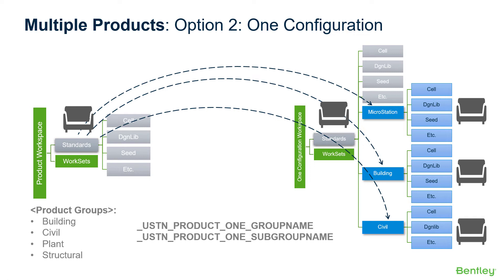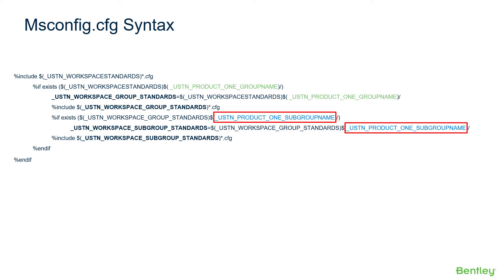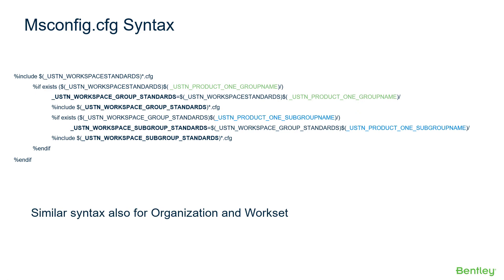The subgroup name represents the individual product. With this, additional syntax has been added to the MS config file to accommodate these variables. The text highlighted in green is the USTN product1 subgroup name. The text highlighted in blue is the product1 subgroup name. This is example text from the workspace portion of the configuration. Note there are include statements which go along with these groupings. Similar syntax is also included for the organization and workset levels.